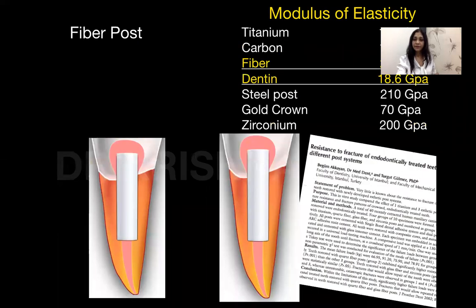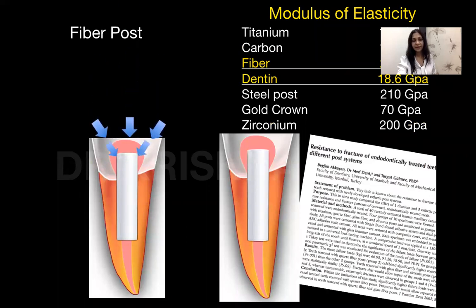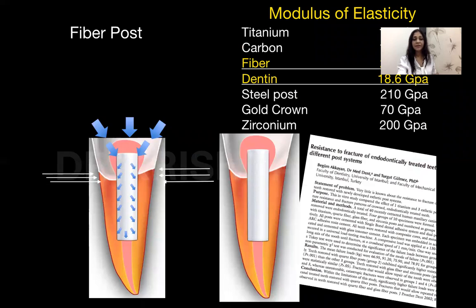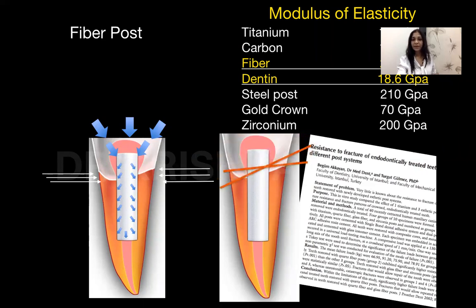If we opt for a fiber post, though it has a modulus of elasticity close to natural dentin, whenever loads are present, they get evenly distributed along the length of the post. But still, being not a very strong material, it is unable to withstand the highest loads present at the cervical margin, which can lead to breakage — either deformation, debonding, or even fracture of the post.